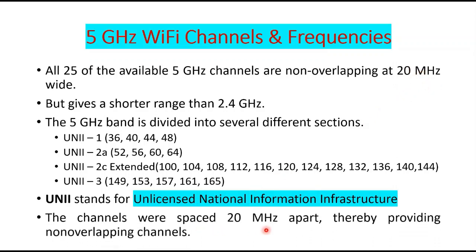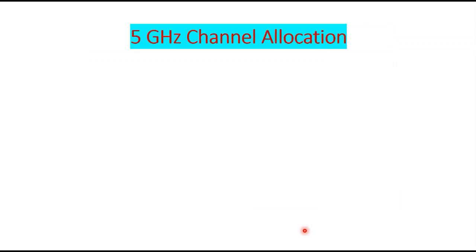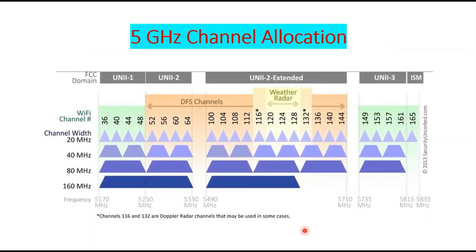Channels 1, 6, and 11 are the three non-overlapping channels in 2.4 GHz; similarly in 5 GHz all channels are non-overlapping. In the pictorial representation: under UNII-1, channels 36 to 48; UNII-2A channels 52 to 64; then 100 to 112, 120 to 128, 136 to 144; UNII-3 channels 149 to 161; and the last one, channel 165, is called ISM.